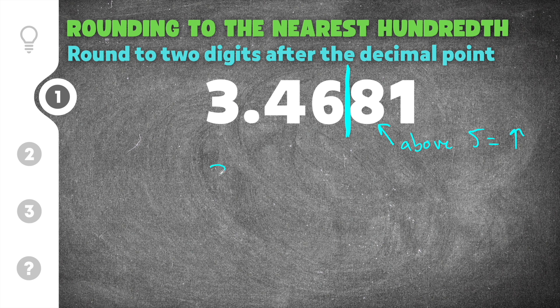We have 3.4, and then the six changes to a seven. All the digits after that turn into zeros. When you write your final answer, you don't need the zeros because they represent nothing. So the answer is 3.47.